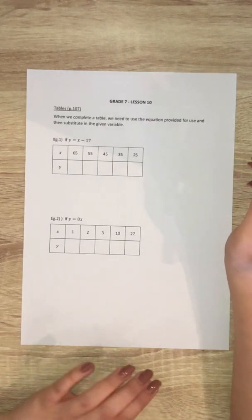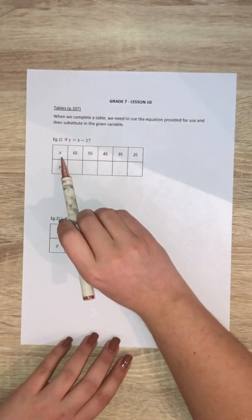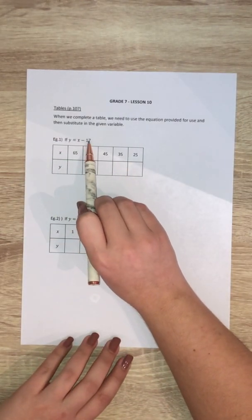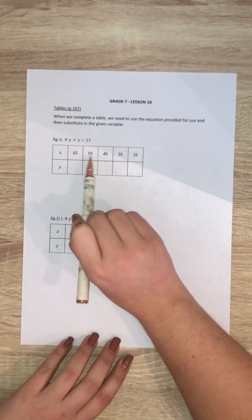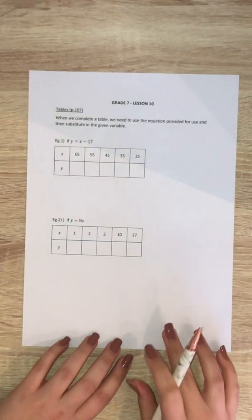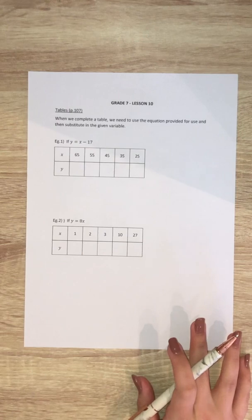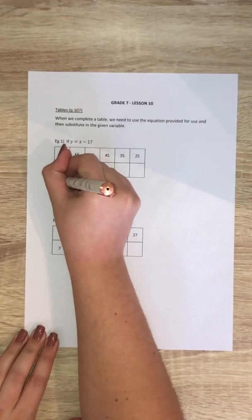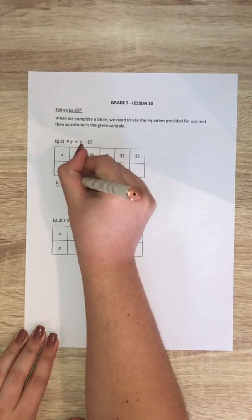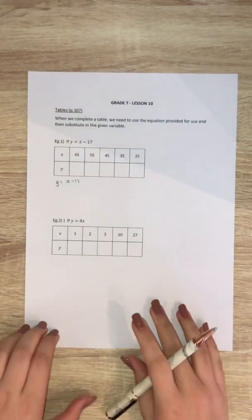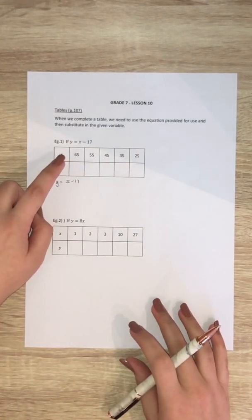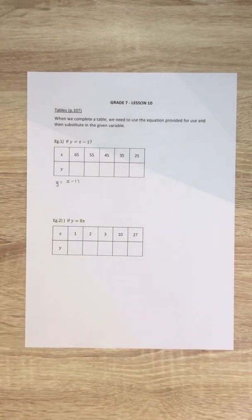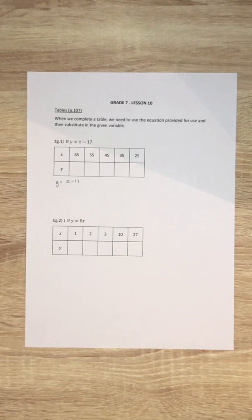It's a very easy method. Basically all we need to do is wherever we see an x in the equation we're going to substitute in these digits and then we work out the answers. The first one, our formula that's given to us is y equals x minus 17. So whatever the value of x is all we're going to do is subtract 17 from it.